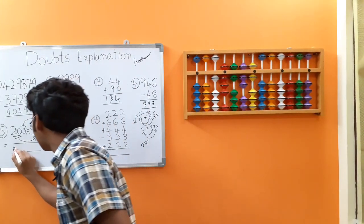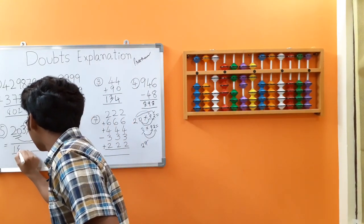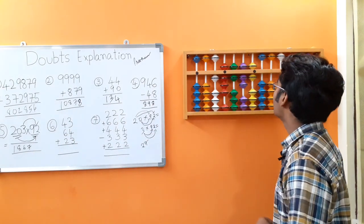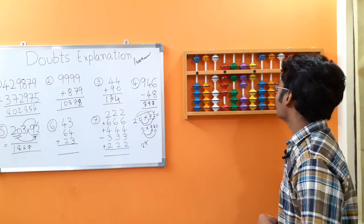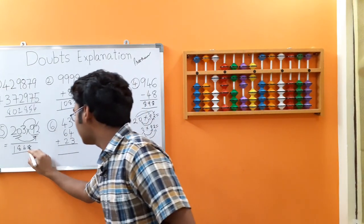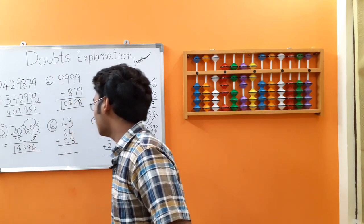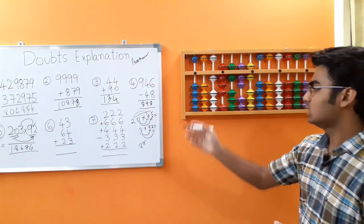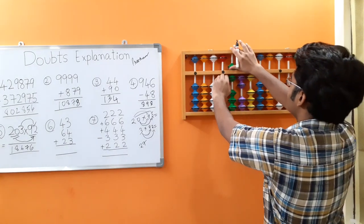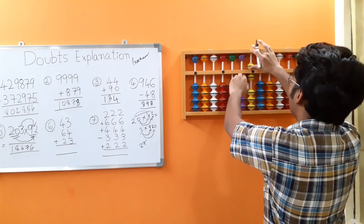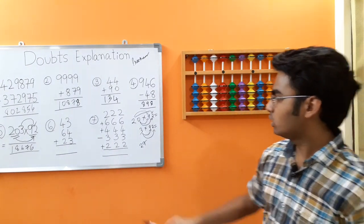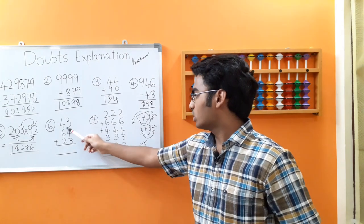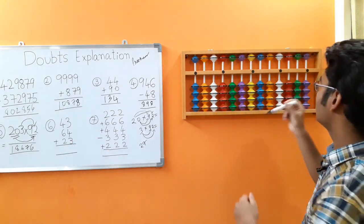This was a very good doubt raised by one of our viewers. Please do practice sums of this sort, and I am going to post many examples like this in our assignments in our Abacus 2.0 course. The 6th sum: we have a 2-digit addition of 3 rows — 43, 64, 23. Let's do this quick.